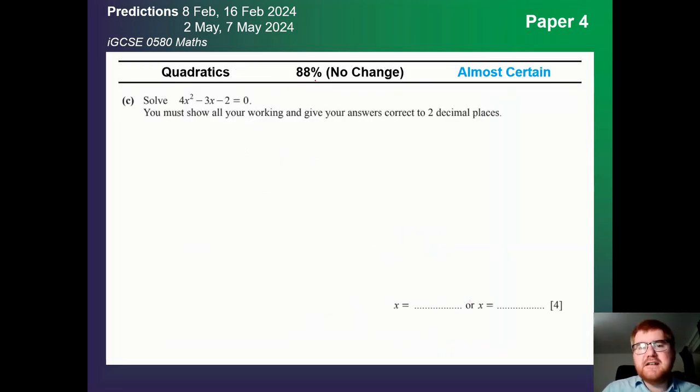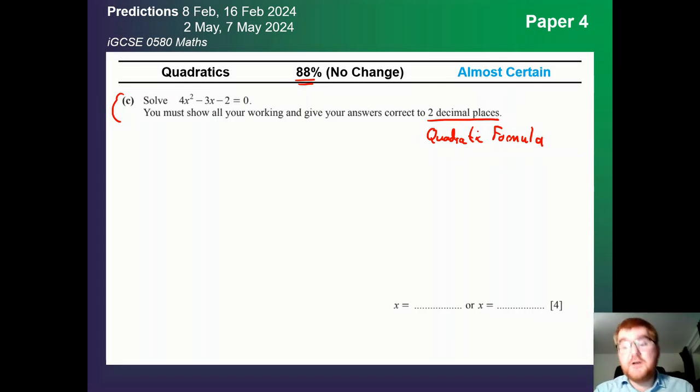On to quadratics. No change at 88%. These questions can vary. This is a very standard question. As soon as they say two decimal places, you need to be thinking the quadratic formula. So use the question to help you guide to what kind of method you need to use to solve this question.